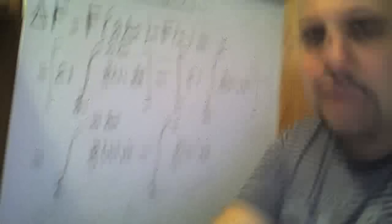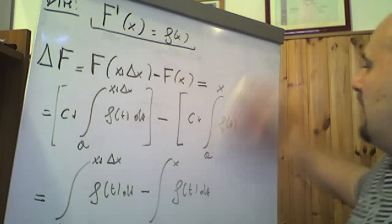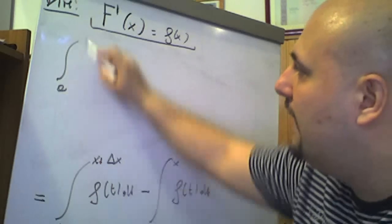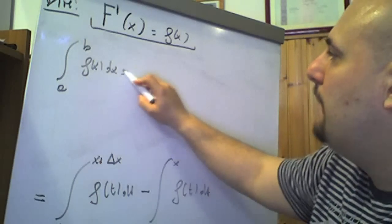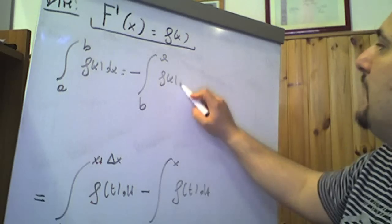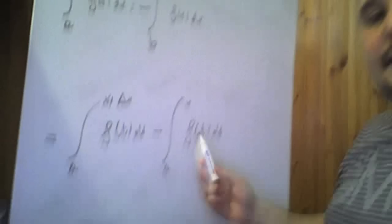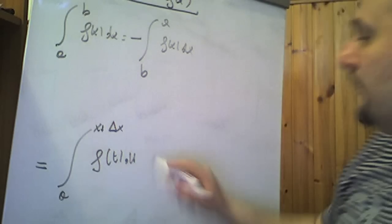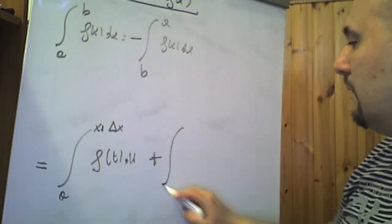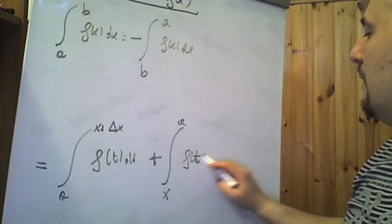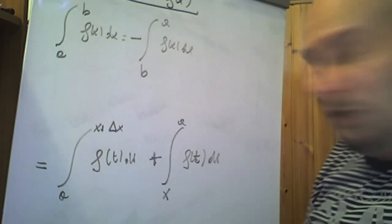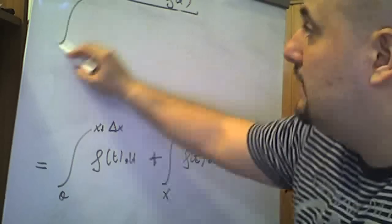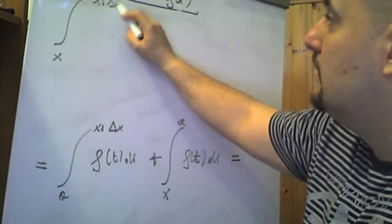Adesso utilizziamo un'altra proprietà che abbiamo visto nel video precedente: possiamo scrivere l'integrale generico fra a e b di f di x dx è pari a meno l'integrale da b ad a della stessa f di x dx. Allora il secondo integrale, quello tra a e x di f di t dt, con il meno davanti, lo possiamo scrivere come integrale fra x e a di f di t dt. Ma a questo punto, sempre per la proprietà dell'additività, abbiamo che questo risulta essere pari all'integrale tra x e x più Δx di f di t dt.